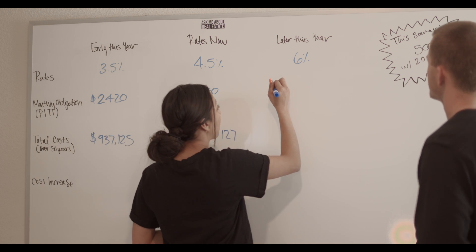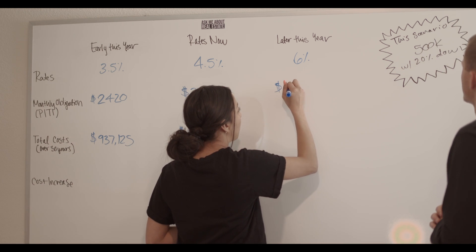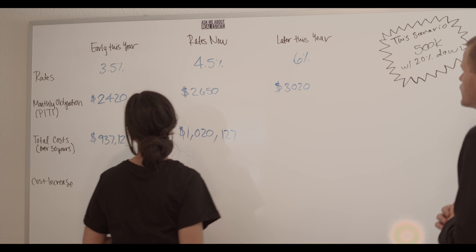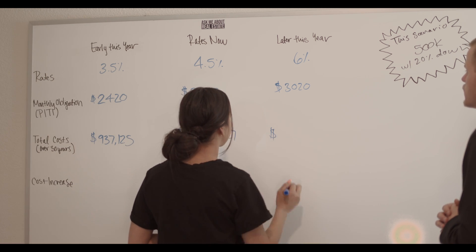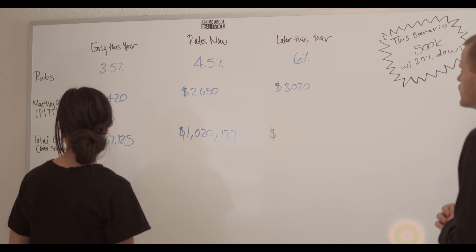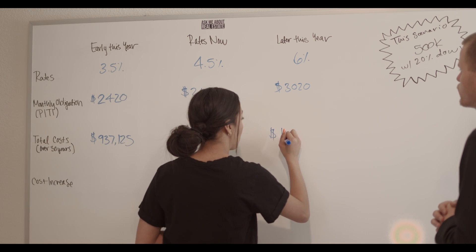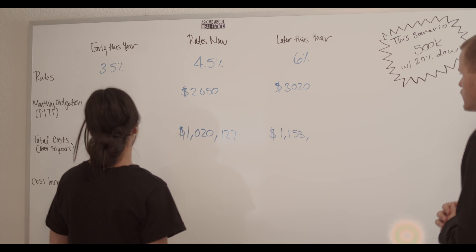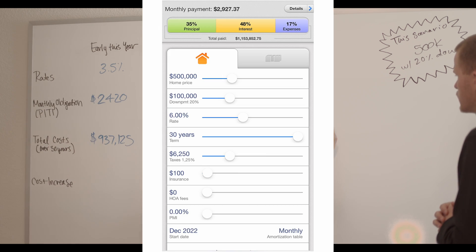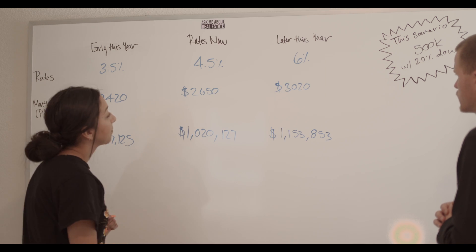So we're going to see around $3,020. And then over the course of 30 years, we're going to see $1,153,853. So already you can see some differences.